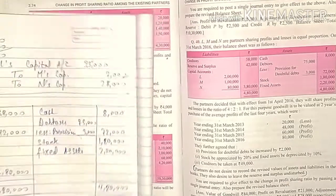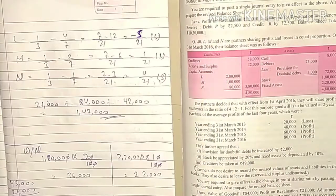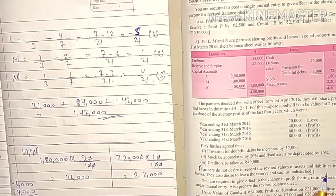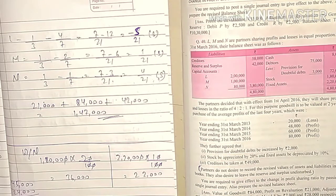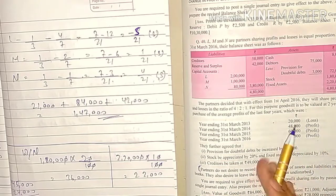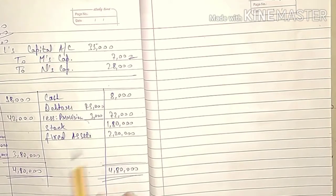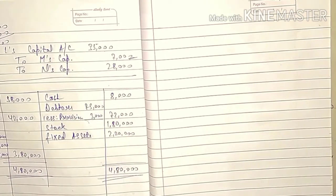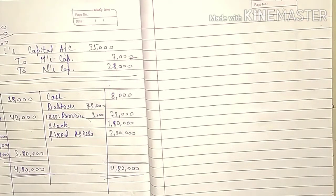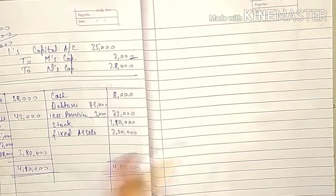So students, question number 40 is complete. It was a very simple question. The key point: partners do not desire to record the revised value of assets and liabilities, so we write the same original amounts in the balance sheet. Only the capital accounts change — gaining partners' capital is reduced and sacrificing partners' capital is increased.